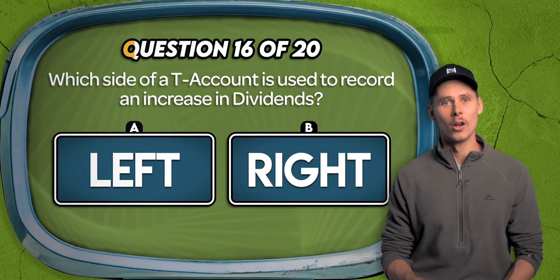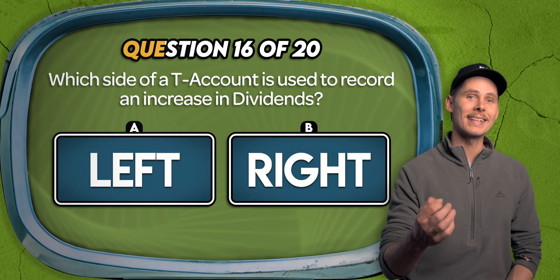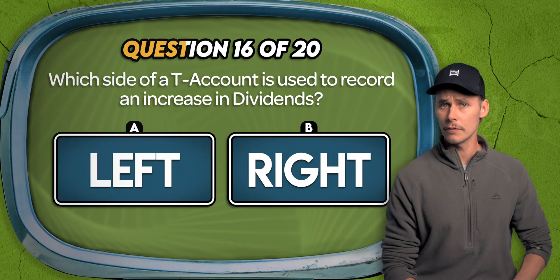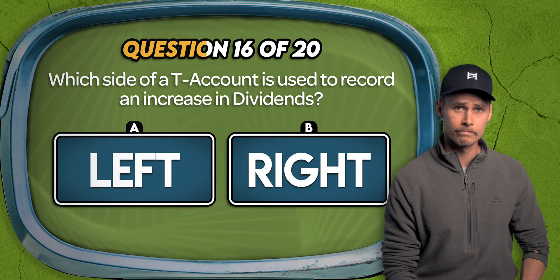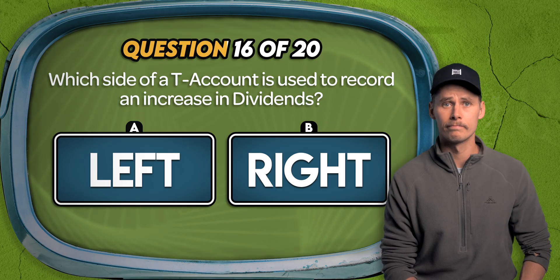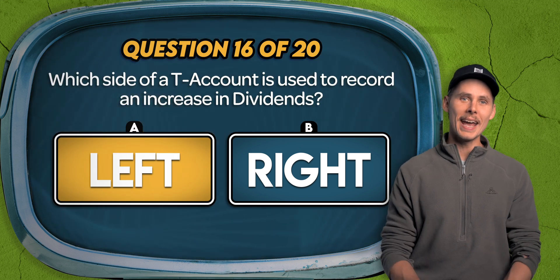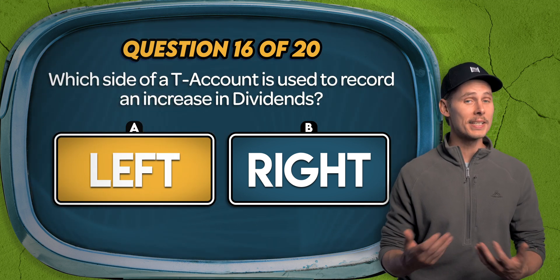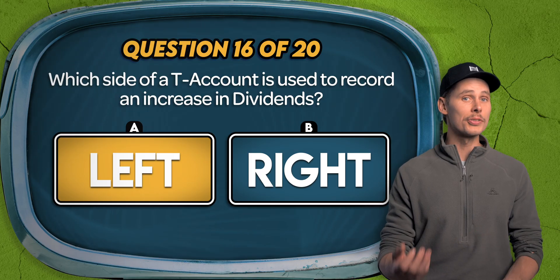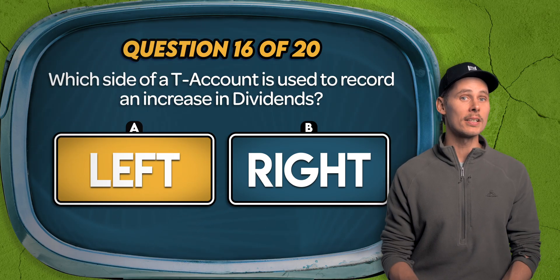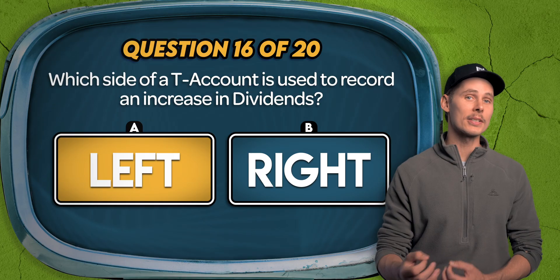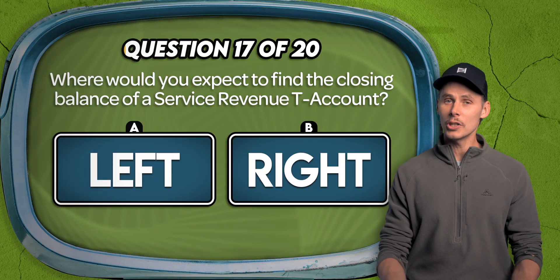Question 16. Which side of a T-account is used to record an increase in dividends declared? The left or the right? The answer is A. Dividends are represented by the D in DEALER, so it's a normal debit account. That means increases are recorded on the left or the debit side of the T-account.